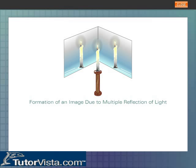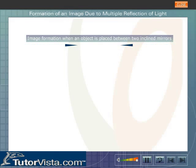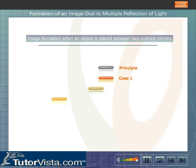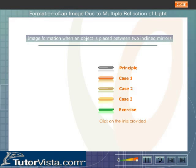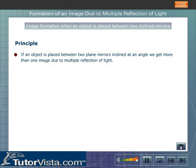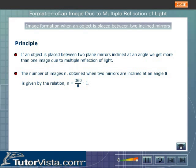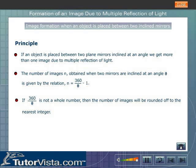Formation of an image due to multiple reflection of light. Principle: if an object is placed between two plane mirrors inclined at an angle, we get more than one image due to multiple reflection of light. The number of images n obtained when two mirrors are inclined at an angle theta is given by the relation n = 360 divided by theta, minus 1. If 360 divided by theta is not a whole number, then the number of images will be rounded off to the nearest integer.